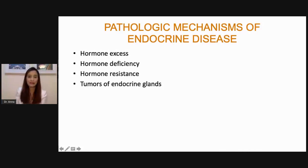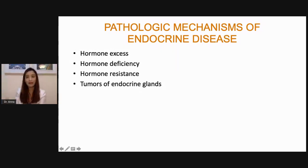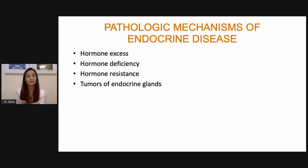There are four pathologic mechanisms of endocrine disease that are easy to remember. We have hormone excess, hormone deficiency, hormone resistance — meaning you have a hormone and a target gland, but the target gland is not able to recognize the hormone — and lastly, tumors of the endocrine glands. Non-functioning tumors don't produce excess hormone nor cause deficiency directly.